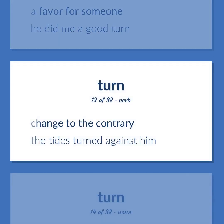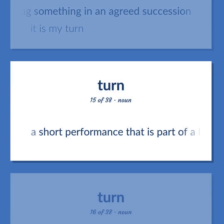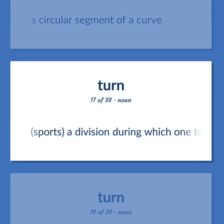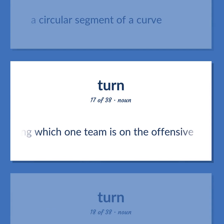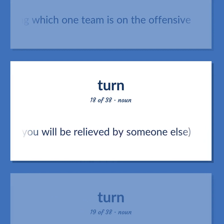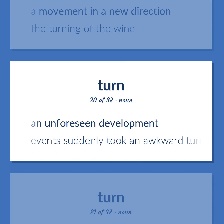Change to the contrary. The tides turned against him. Game: the activity of doing something in an agreed succession. It is my turn. A short performance that is part of a longer program. A circular segment of a curve. Sports: a division during which one team is on the offensive. A time period for working after which you will be relieved by someone else. A movement in a new direction. The turning of the wind. An unforeseen development. Events suddenly took an awkward turn.